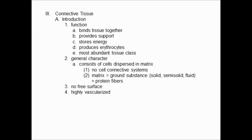Another commonality of connective tissue is there is no free surface. Epithelia have a lumen on the apical side and hook to a basement membrane on the other side, but connective tissue always has other tissues on each side. Unlike epithelium, which lacks blood vessels, connective tissue is highly vascularized, with large and small blood vessels always going through it — that is another commonality.